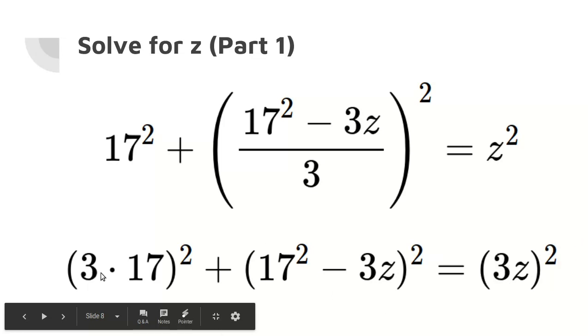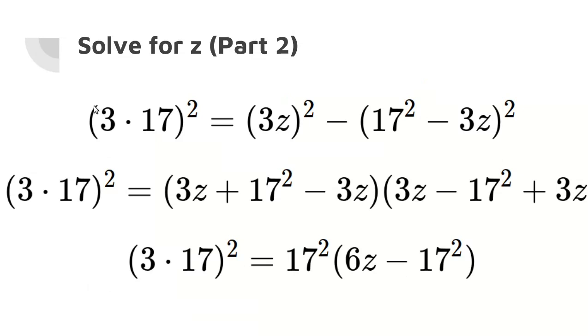Again, I haven't simplified 3 times 17 because this 17 might cancel out with another 17 somewhere. Hint, hint. So I'm not going to do any extra work and multiply 3 times 17 yet. Now, we have this equation. And what I've done in the first step is subtract (17 squared minus 3Z) squared on both sides. So now (17 squared minus 3Z) squared is on the right side instead of the left side. The reason I did that is because we now have difference of perfect squares on the right-hand side here. So something squared minus something squared.